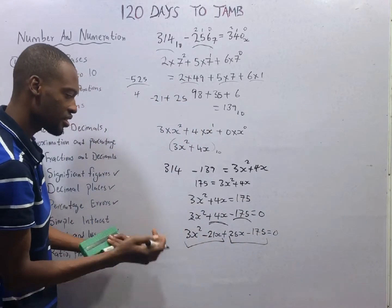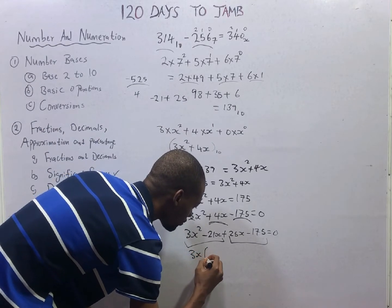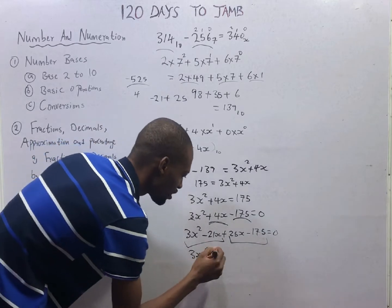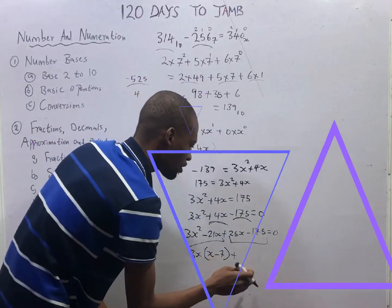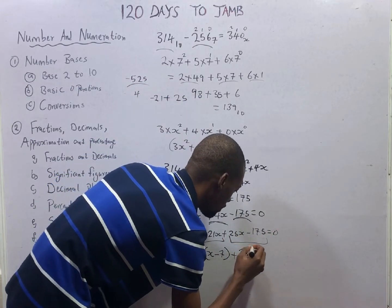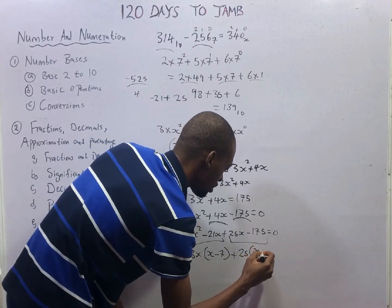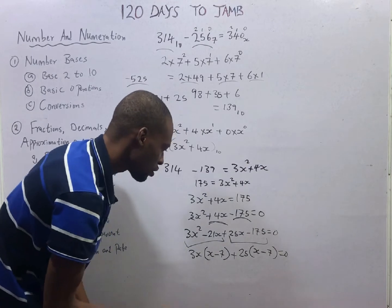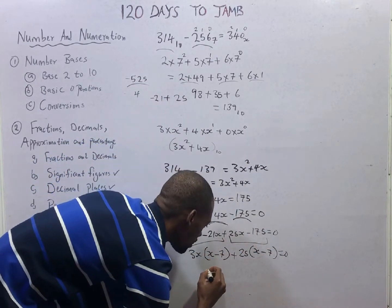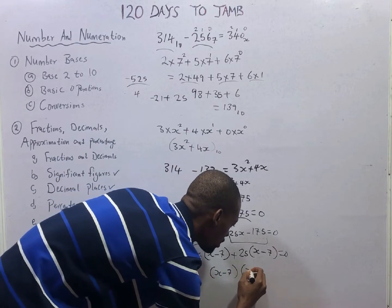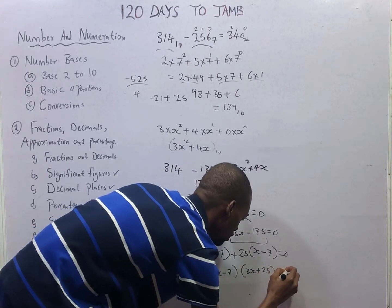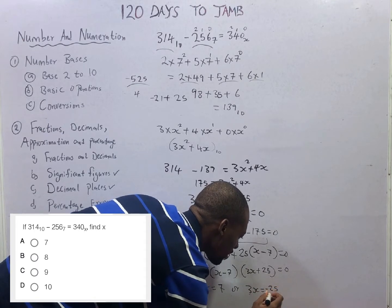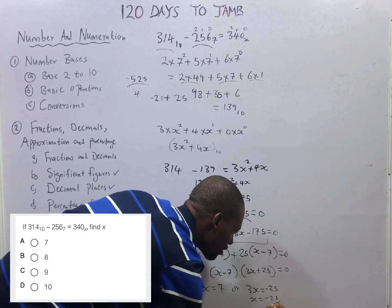We look for two numbers that when we add we get plus 4S. If you think very well, the numbers are minus 21 and 25. If we add minus 21 plus 25 is 4, and minus 21 times 25 is minus 525. So that will work for us. We replace it here: 3S² minus 21S plus 25S minus 175 equals zero. Joining two together, what is common between this and this is 3S, so 3S² divided by 3S, that is S minus 7. 25 is common between these two, 25S divided by 25 that is S, minus 175 divided by 25 is minus 7, which equals 0. So from here, S minus 7 and S minus 7, which is 3S plus 25 equals 0. S is therefore equals 7 or 3S equals minus 25, and S equals minus 25 over 3.